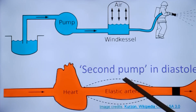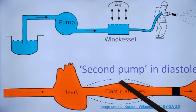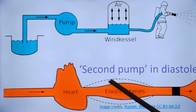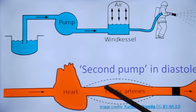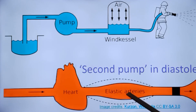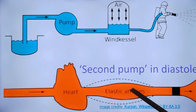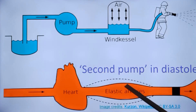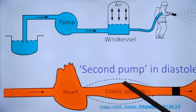In systole, contraction of the myocardium compresses the intramyocardial vessels, so that the subendocardial region gets more blood supply in diastole. Maintaining a good pressure in diastole is therefore important for the coronaries, and the second pump action in diastole by the elastic aorta gives a boost to coronary circulation.